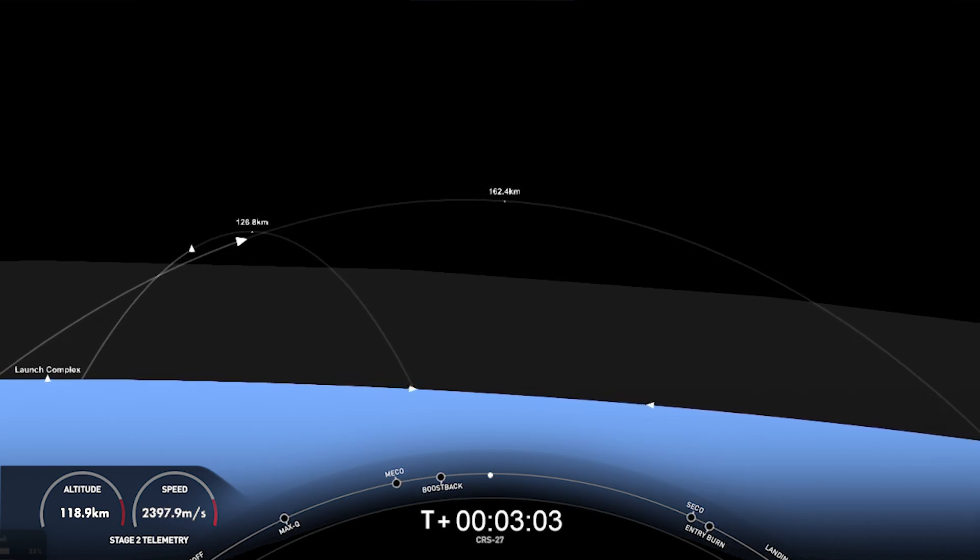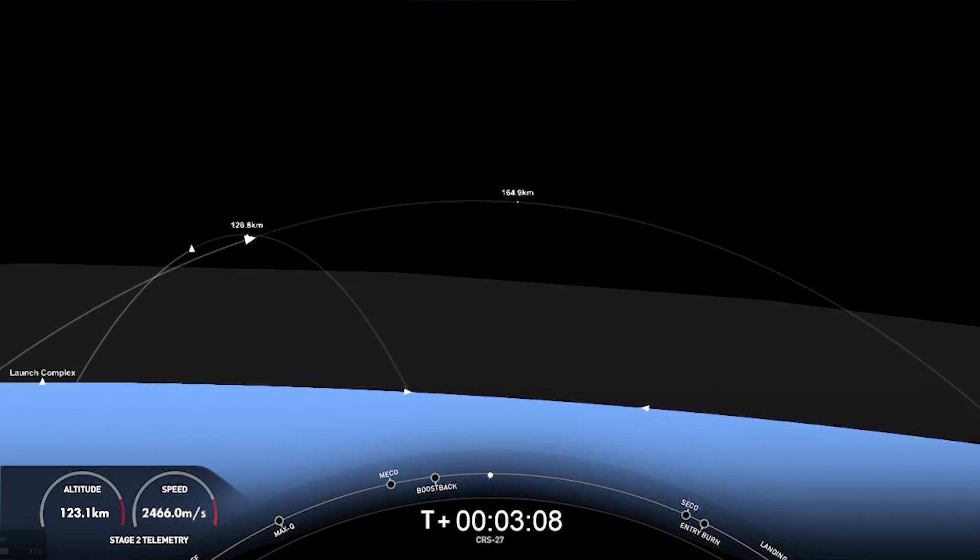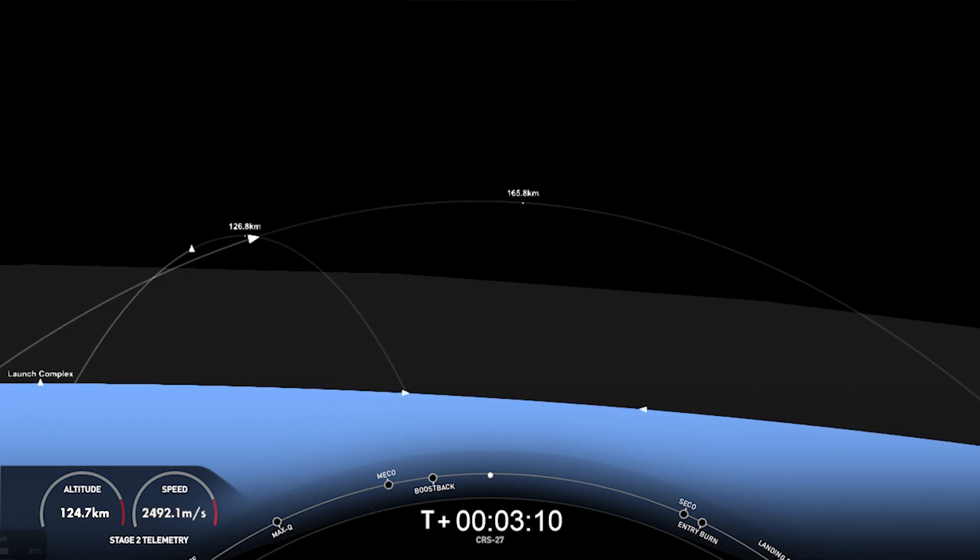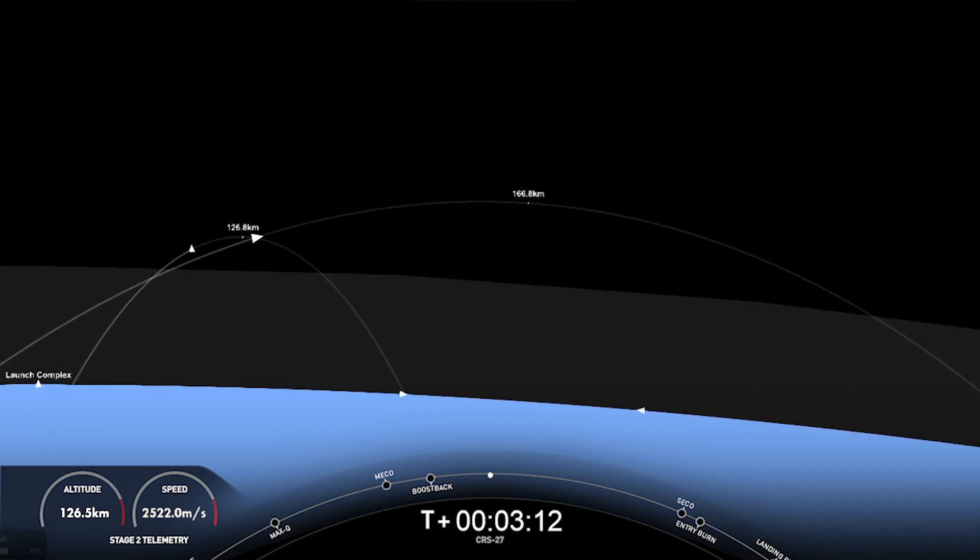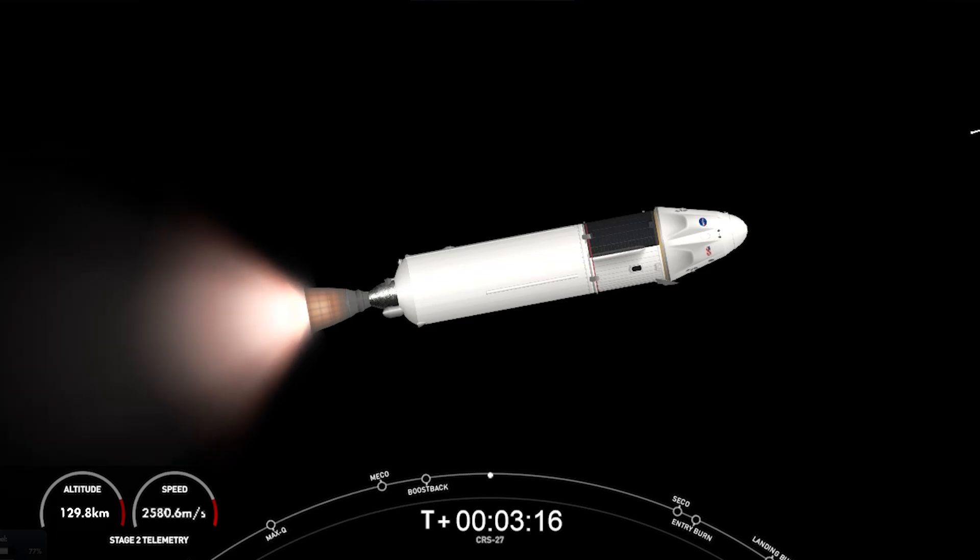If you're just tuning in, you're watching a live webcast for the 27th commercial resupply mission to the International Space Station for NASA. This is SpaceX's 17th mission for 2023 and the second Dragon flight to the International Space Station this year. We lifted off from Kennedy Space Center's historic Launch Complex 39A just about 3 minutes and 45 seconds ago.